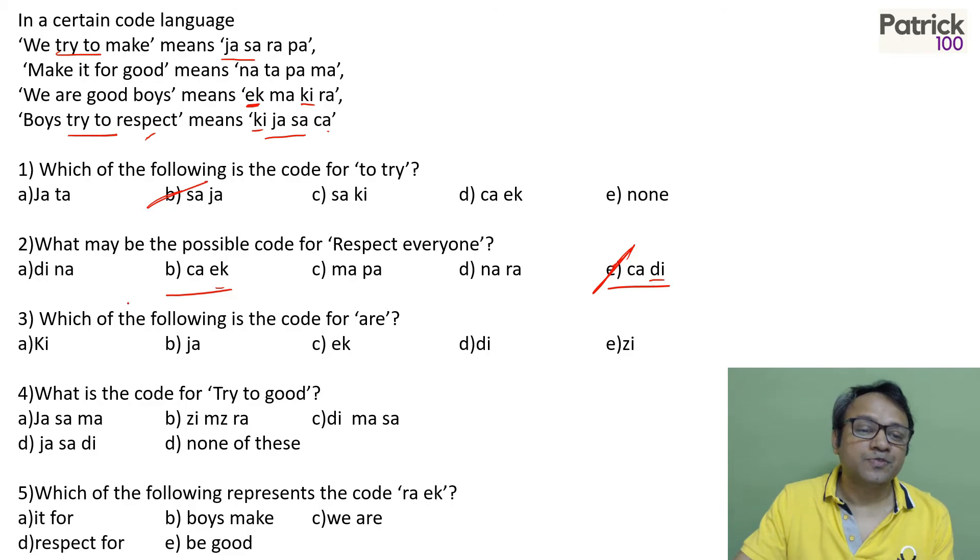So it has to be E option. Because it said which is a possible code. So basically that's the answer. If it said which of the following is the code, then you can't find out. But which of the following is the possible code? Yes.